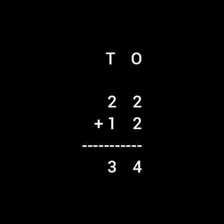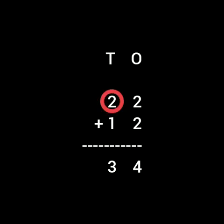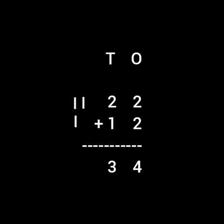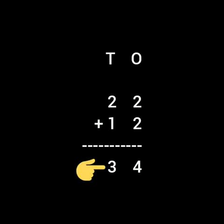You have to take out 2 fingers on one hand and again 2 fingers on the other hand, and then count them together: 1, 2, 3, and 4. So the answer for the ones column is 4. Now let us see the 10's column. There you have to count 2 plus 1: 1, 2, and 3. So the answer is 3. Means 22 plus 12 equals 34.